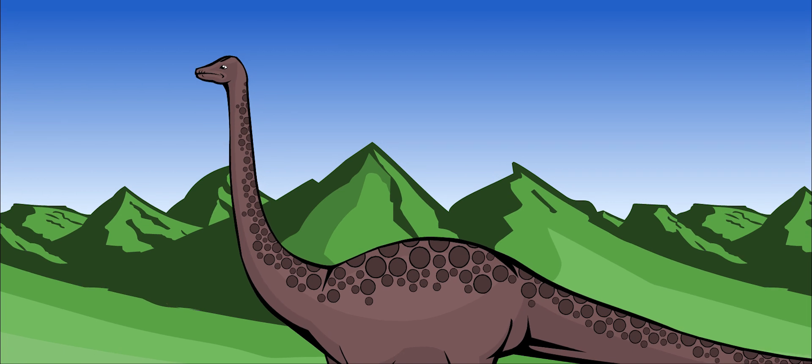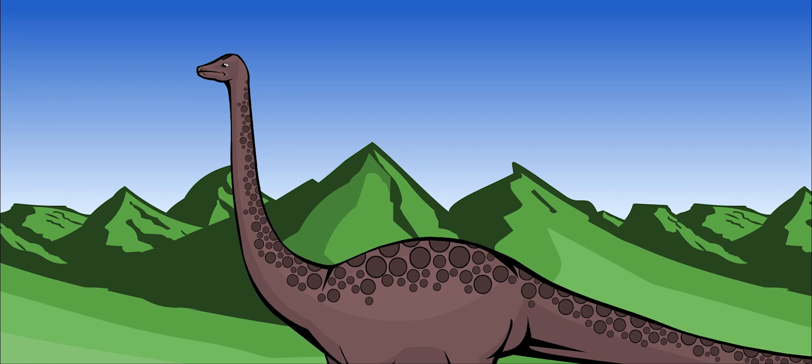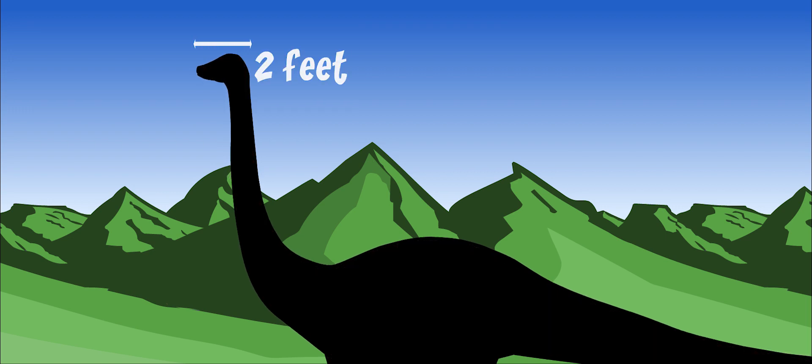Diplodocus was not a very intelligent dinosaur. Its head was less than two feet long. The space in its skull for a brain was very small. Some paleontologists think that Diplodocus had a second brain in its backbone, near the hips. This might have helped send messages from its brain to its back legs and tail.